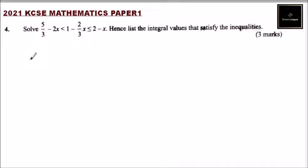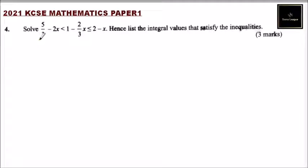This is question number four. You are told: five over three minus two x is less than one minus two over three x, less than or equals to two minus x. Hence, list the integral values that satisfy the inequality. To do this, you split it into two separate inequalities, as you learned in form two.